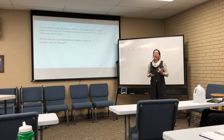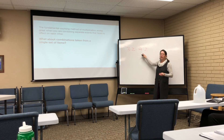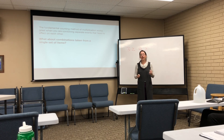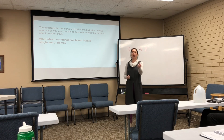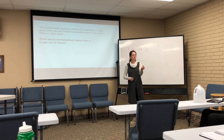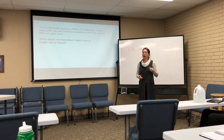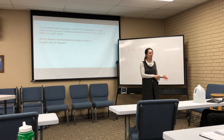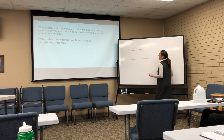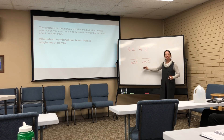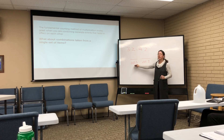The fundamental counting method works great when you've got all these separate events where one event has no effect on the others. Whether the event is something completely different, like a car versus a tire, or whether it's an event that happens first or second. For example, if I roll a die twice, those are two separate events — what I get on the first roll doesn't change the options on the second roll. Each roll has six options and they don't affect each other.